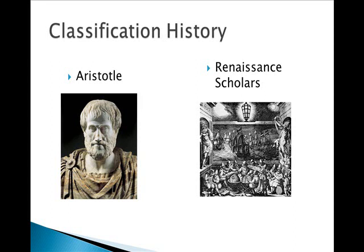Aristotle believed that all things found in nature existed on a ladder called the Scala Naturae. The idea still persists today in the concept of higher or lower order organisms, which is frankly silly. Aristotle displayed his own preference on the scale by stating that human women were below worms on the ladder of life. But then again, he was Greek and they did have other interests.